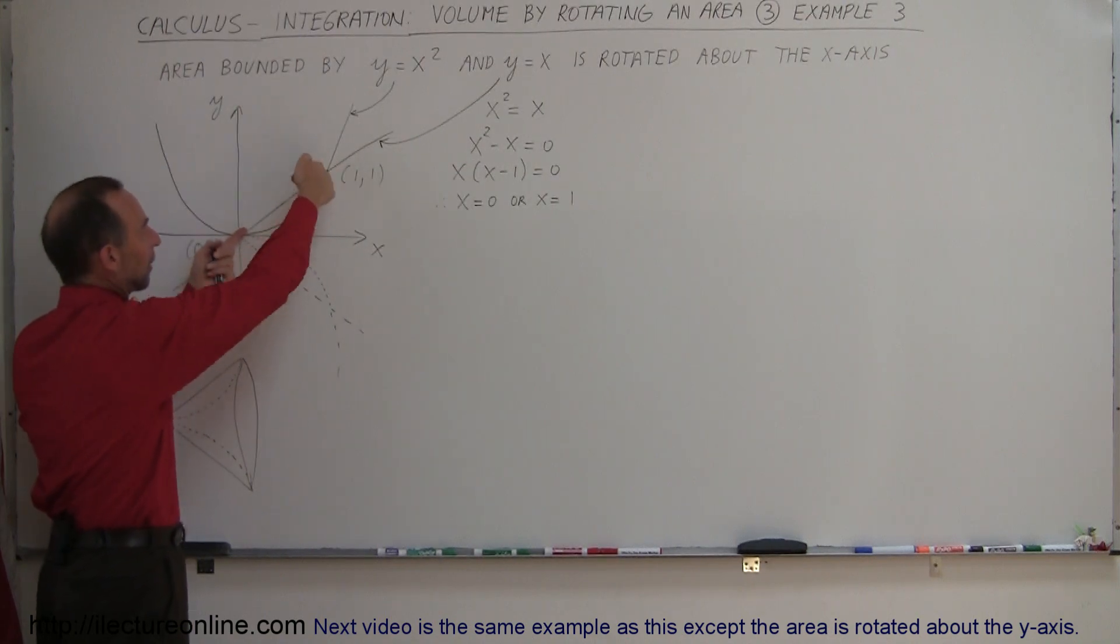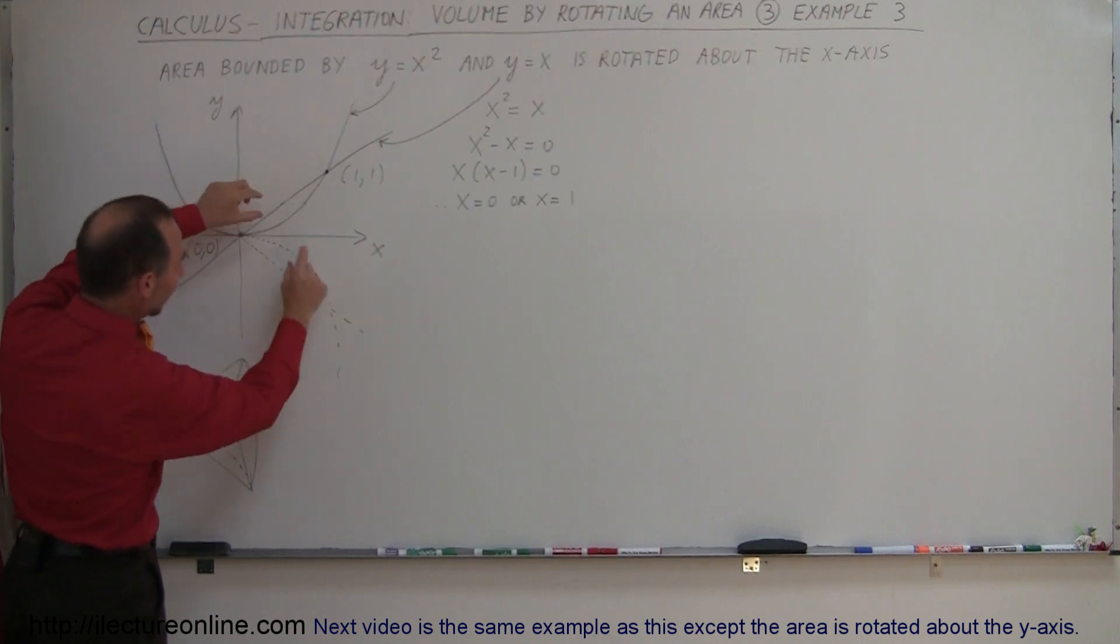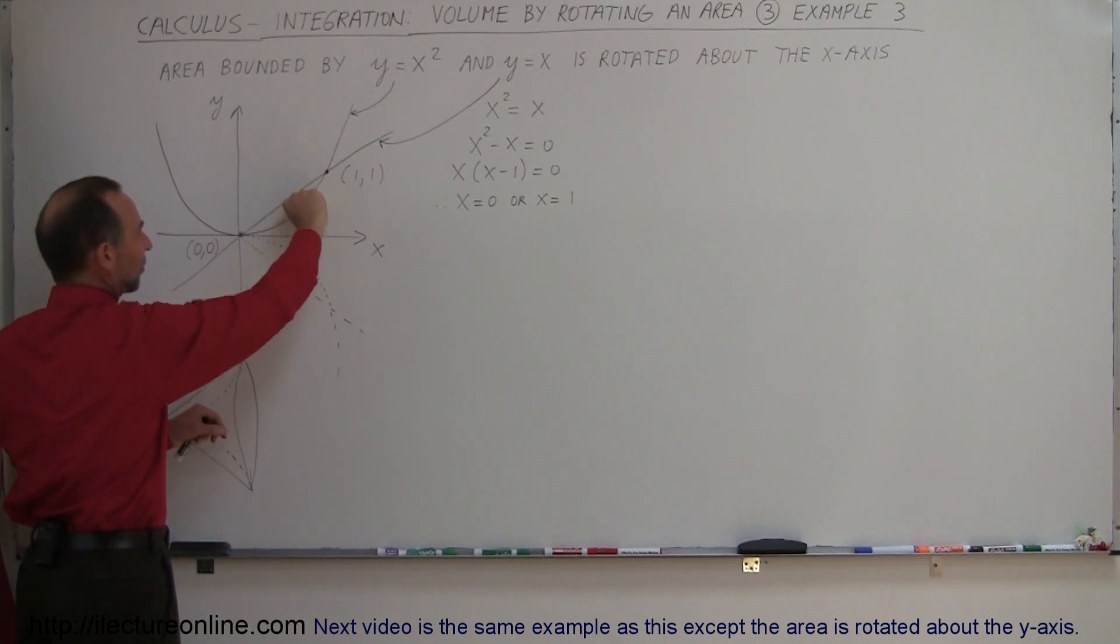If we take that area now and rotate it about the x-axis, we end up with some sort of cone volume that has a varying thickness wall.